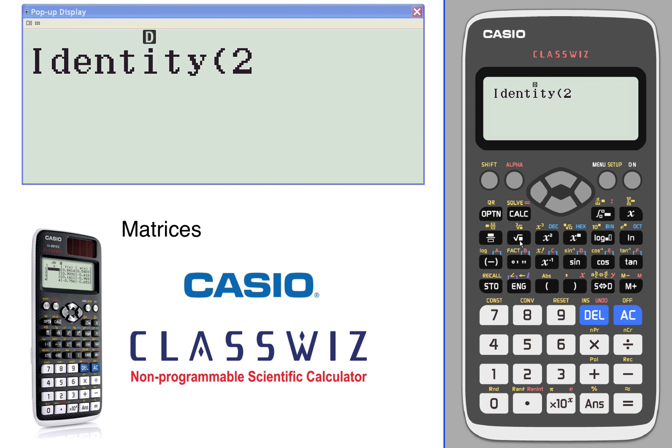Finally, the identity matrix. You want to do a 2 by 2, the 2 by 2 identity matrix.